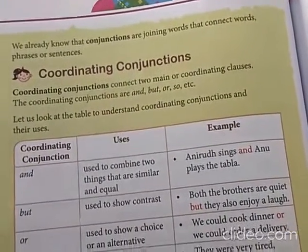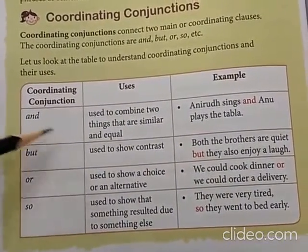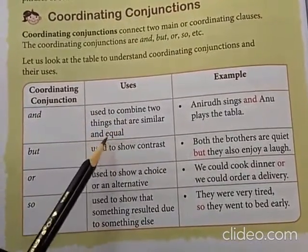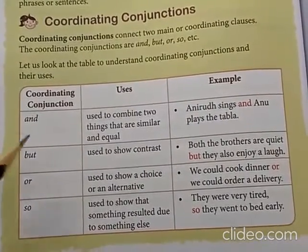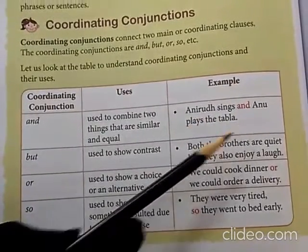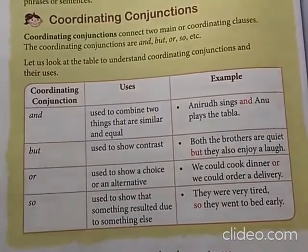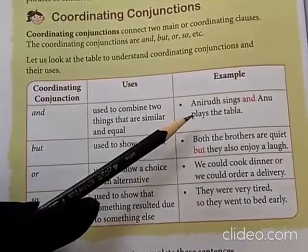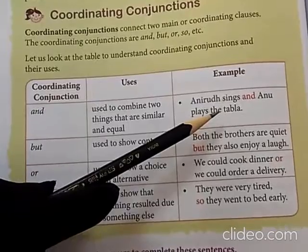As we can see in the table here, the types of coordinating conjunctions are: and, but, or, so. 'And' is used to combine two things that are similar and equal — sentences which are almost similar and have equal importance. For example: Anirudh sings and Anu plays the tabla. So we are talking about two people who each have a musical skill.